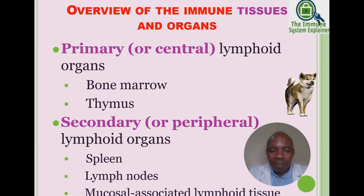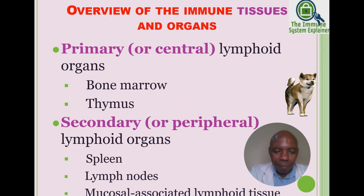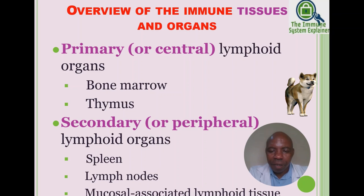The secondary (peripheral) lymphoid organs include the spleen — important for B cell activation in germinal centers — lymph nodes spread throughout the body, tonsils, axillary lymph nodes, inguinal lymph nodes, and the mucosal-associated lymphoid tissues (MALT). MALT is found within mucosal regions, particularly around the gut, and confers protection in those areas.